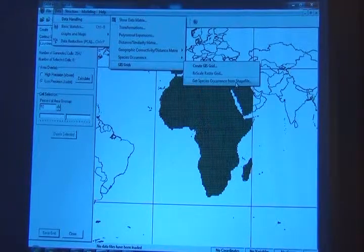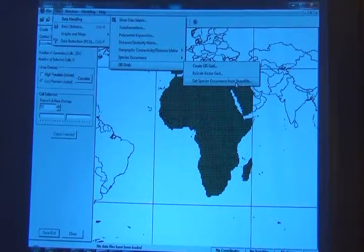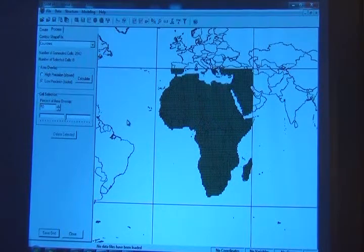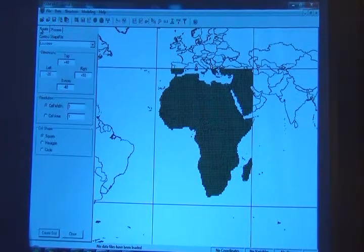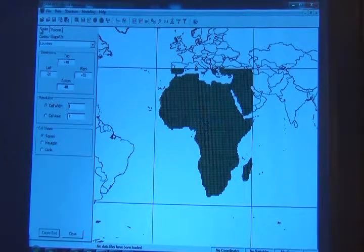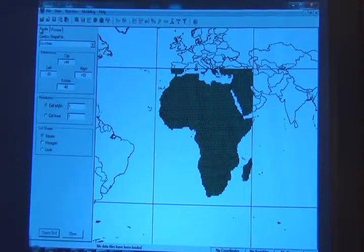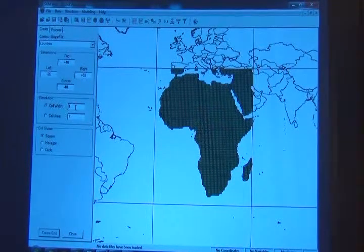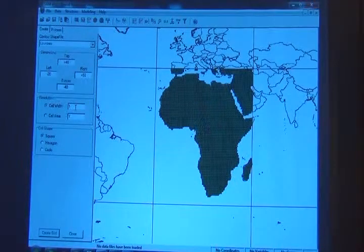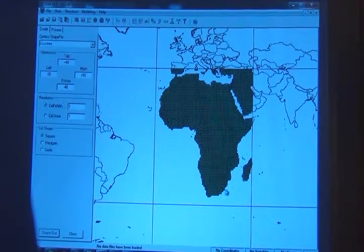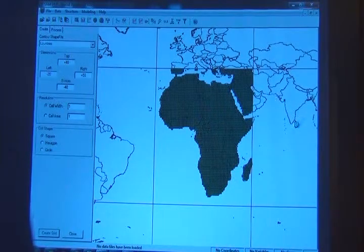The size of the grid cells? The unit is degree. Here I'm building a grid that is one by one degree. If I change here for 0.5, there will be 0.5 by half degree.